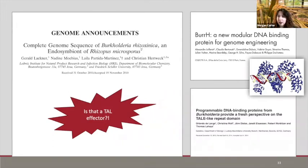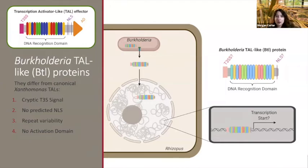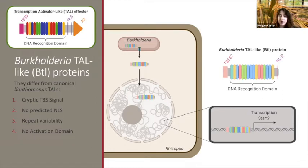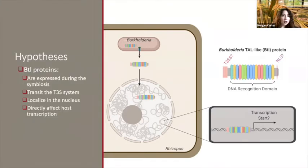I'm much more interested in the native role of these proteins — what are they really doing in this symbiosis? We're calling them Burkholderia TAL-like proteins, or 'BeTEL' proteins, because they don't look exactly like Xanthomonas TALs. They have a cryptic type 3 secretion signal, no predicted nuclear localization signal despite being able to bind DNA, much higher variability in their repeat recognition domain, and no activation domain — so it's very unclear what they do once they bind DNA. The key questions are: Are they expressed during the symbiosis? Are they secreted? Where do they go? And what do they do?